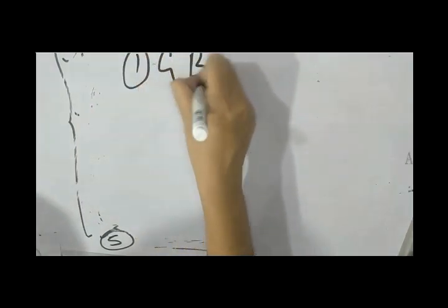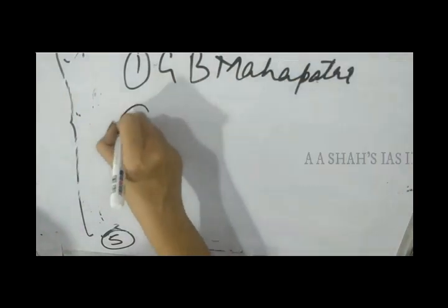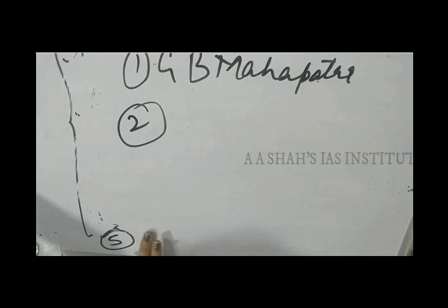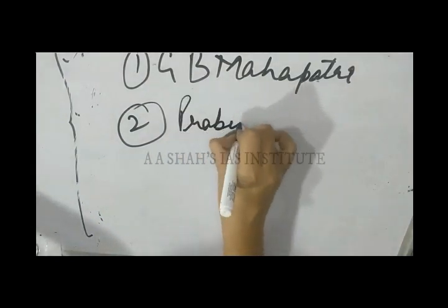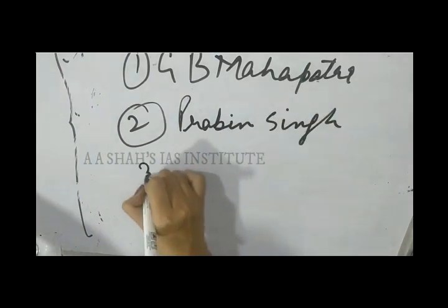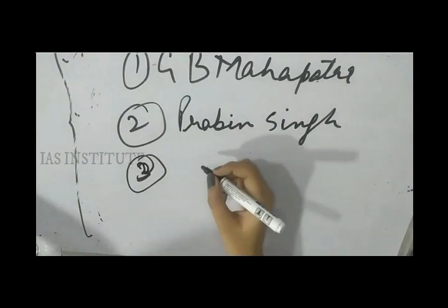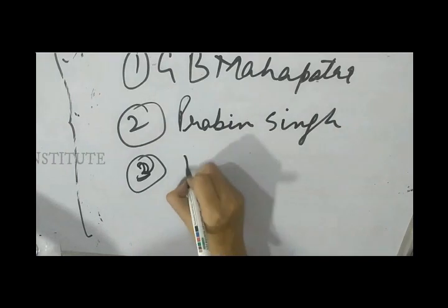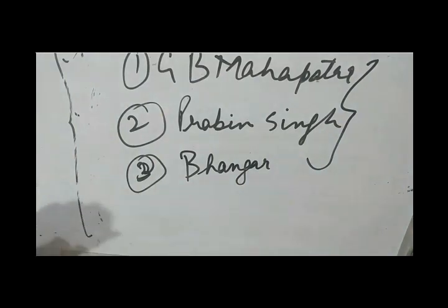Number one, you have a book called Jeevi Mahapatra. Number two, you have a book called Praveen Singh. A little bit of this will be important. And number three, you will have a book called Bhangad. These three books should be more than sufficient to cover these particular topics for the test, or the particular topics given in this lecture that we are going to start just now.